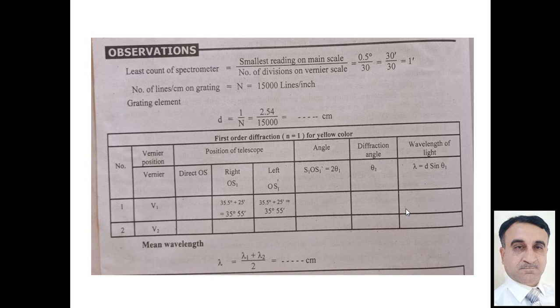The left side and the right side, the difference in angle is S1, O, S1 prime, that is equal to 2 theta 1. If we divide, the next column is the diffraction angle theta 1.